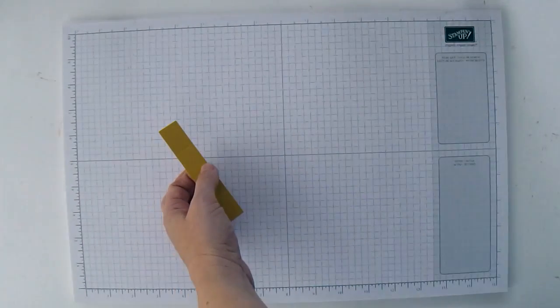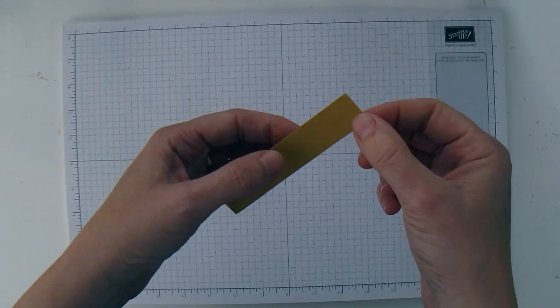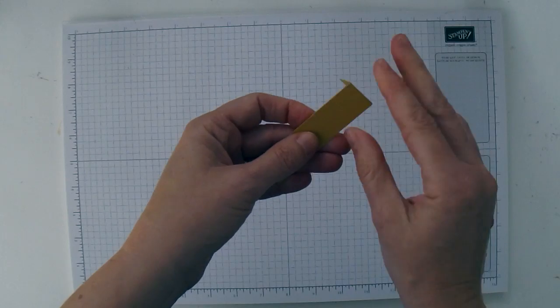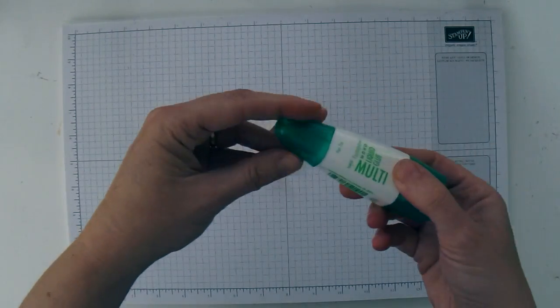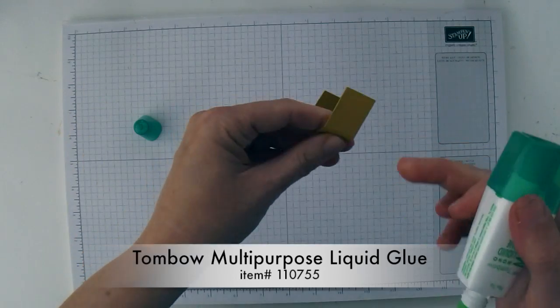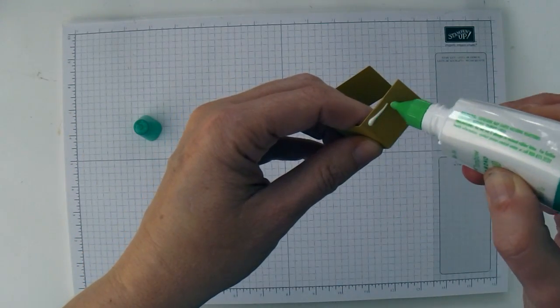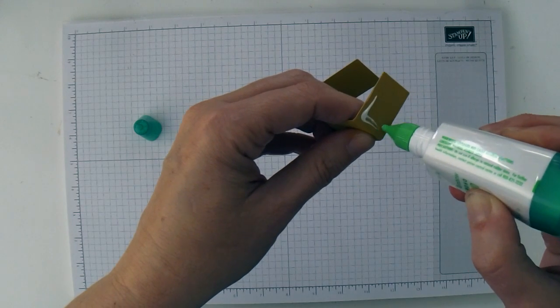Put your scoring tool aside. Now I'm going to bend the cardstock along all the score lines. Then I'm going to take Tombow and I'm going to put it on one of the scored ends, or one of the scored end segments.